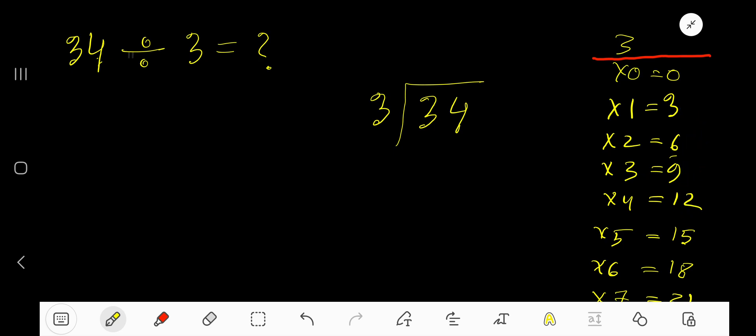9 plus 3 equals 12. So, 3 goes into 3 how many times? One time. Write 1. 1 times 3 gives you 3. Subtract, you get 0. Bring down the next digit: 04.